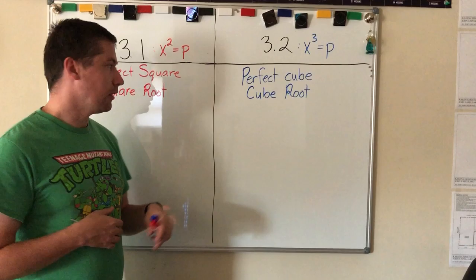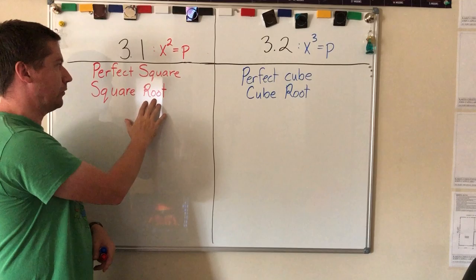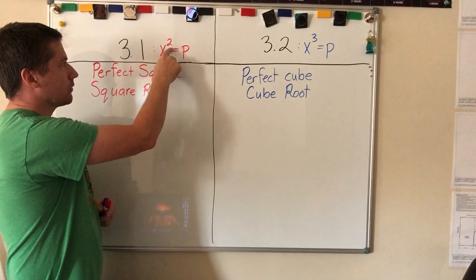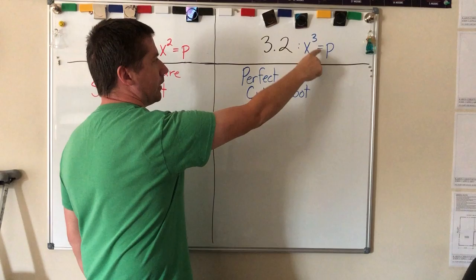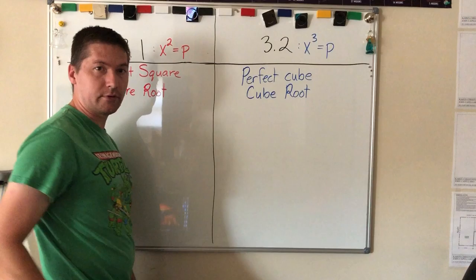In 3.1 we learn about perfect squares and square roots, and the formula that we like to go by is x² = p, where p represents product. In 3.2 we have a very similar formula: x³ = p, so we're talking about perfect cubes and cube roots.